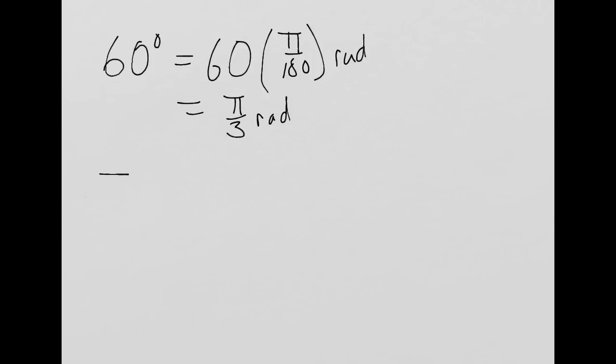And similarly, if I started with, say, pi over 6 radians, if I wanted to convert that to degrees, pi over 6 times 180 over pi, 30 degrees.